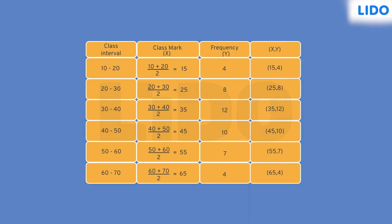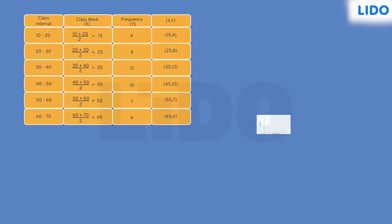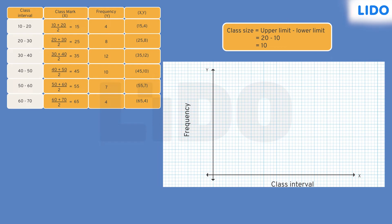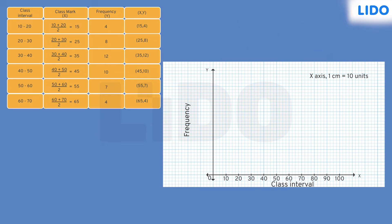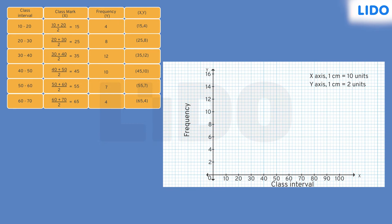Now, considering the coordinates, the scale is decided. The scale on the x-axis is taken by looking at the class size, which is the difference between the upper and lower class limits. Since the difference between any two class limits is 10, we can take the scale as 1 cm equals 10 units on the x-axis. The scale on the y-axis is taken considering the frequency. Most numbers except 7 in the frequency column are multiples of 2, so we can take the scale as 1 cm equals 2 units. We can easily accommodate 7 in this scale as well.